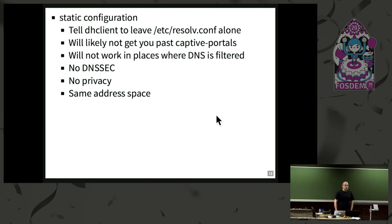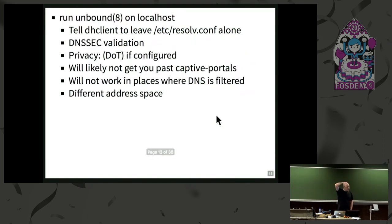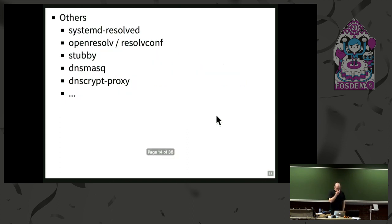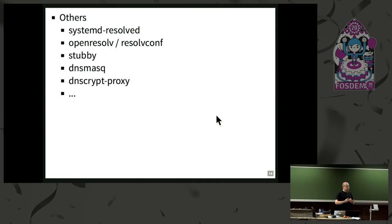A variation is: I really don't trust that network, so I put one of the quad addresses in resolv.conf. This will very likely not get you past captive portals, and it also will not work in places where DNS is filtered. Then in OpenBSD, we do have Unbound in base, so people figured they can just run that, which gives you DNSSEC validation. You can have privacy with DoT if you configure it. But they'll very likely not get you past captive portals, and it will not work in places where DNS is filtered. However, it runs in a different address space. There was also a talk last year at FOSDEM about systemd-resolved, which seems like they're trying to solve the same problem we are with Unwind.